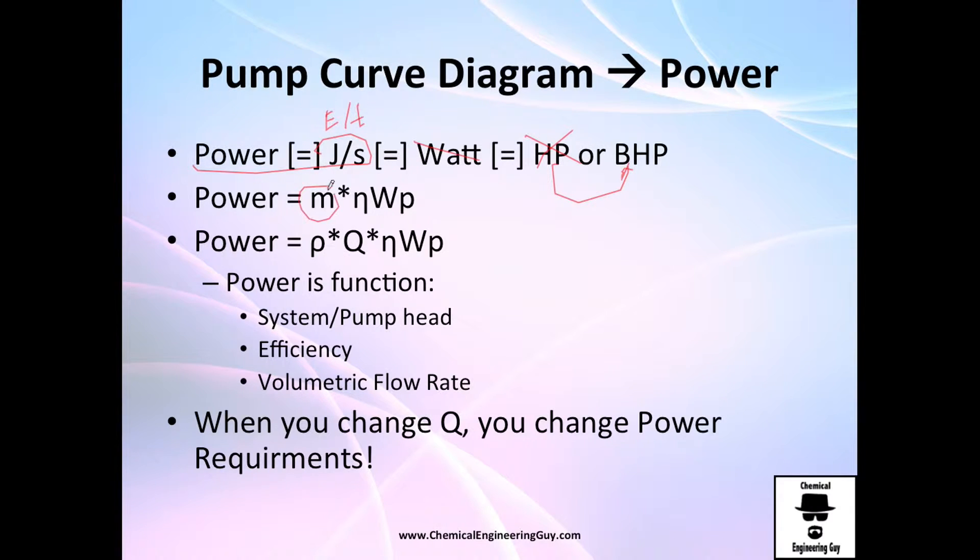Power comes from mass flow times the system head, or the pump head. Recall that we can calculate mass flow as density times volumetric flow rate, so therefore the power will be function of the system head, which at the same time is the pump head, and the efficiency of our pump, and the volumetric flow rate Q.